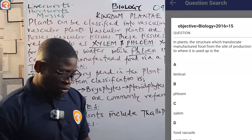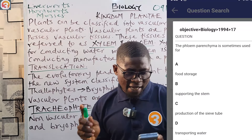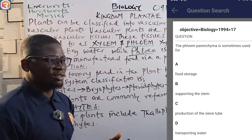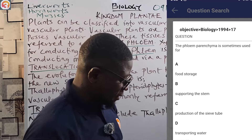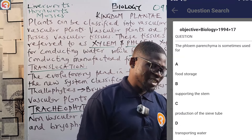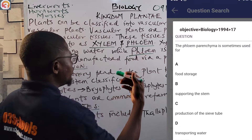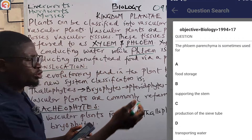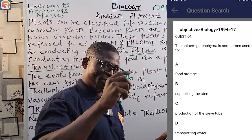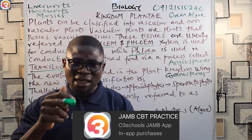Here's a 1994 JAMB question, number 17: 'The phloem parenchyma is sometimes used for...' We know the phloem is for conducting manufactured food. Options: A — food storage, B — supporting the stem, C — production of sieve tube, D — transporting water. We know xylem is for transporting water, and phloem is for the conduction of manufactured food — so phloem parenchyma is used for food storage. The correct answer is A — food storage. There are thousands of questions on the O3 Schools JAMB app — download and activate it for just 3,000 naira.